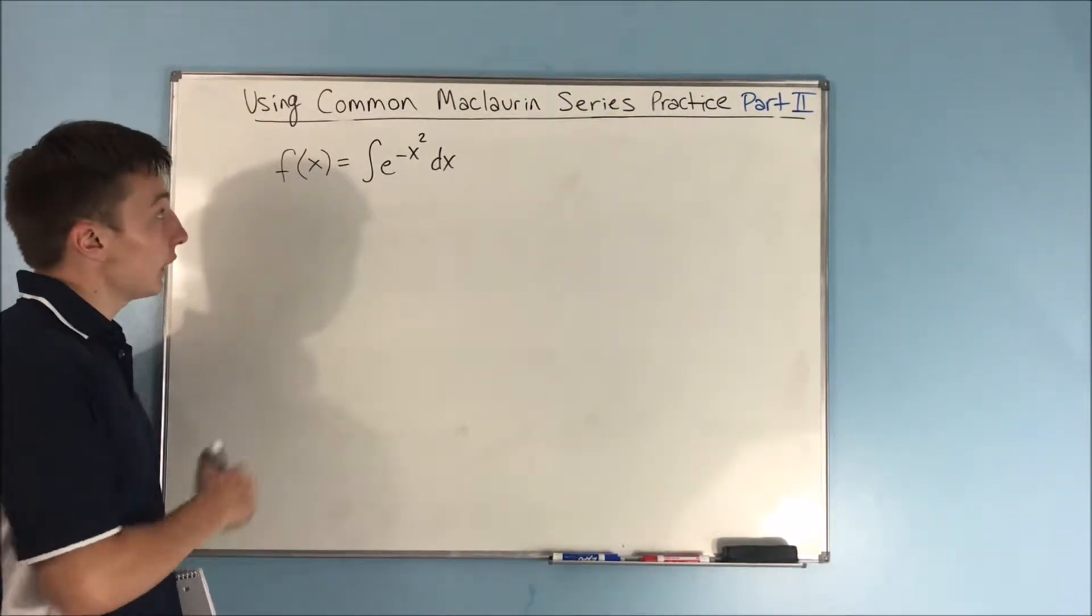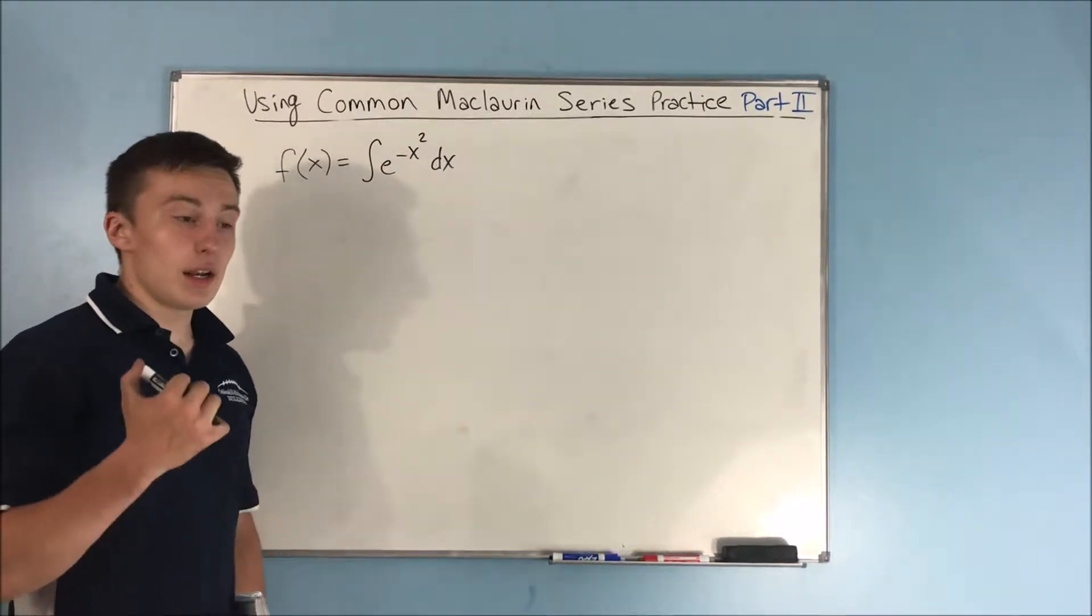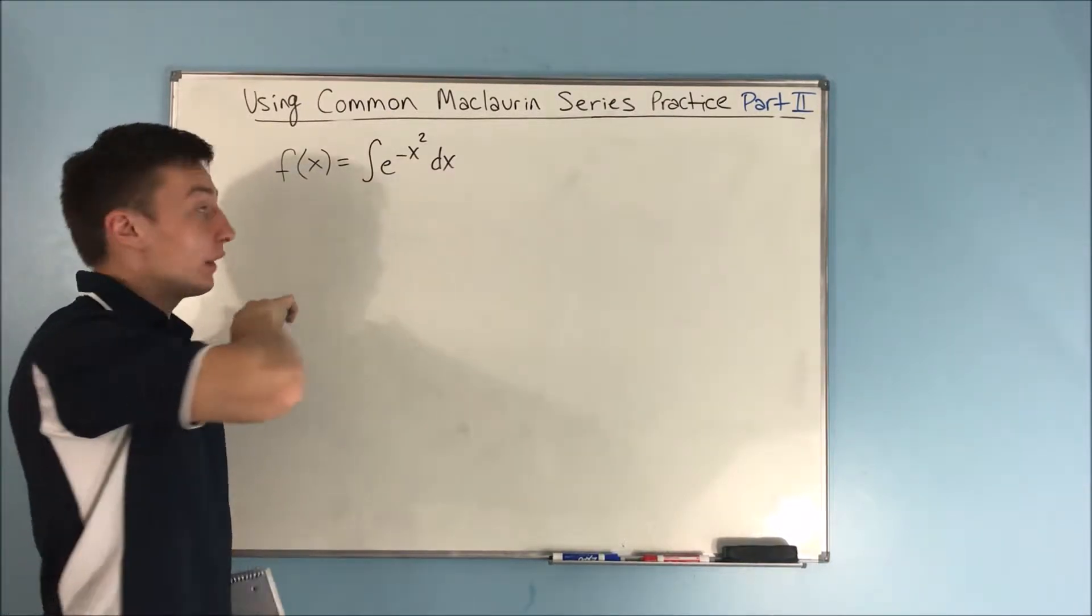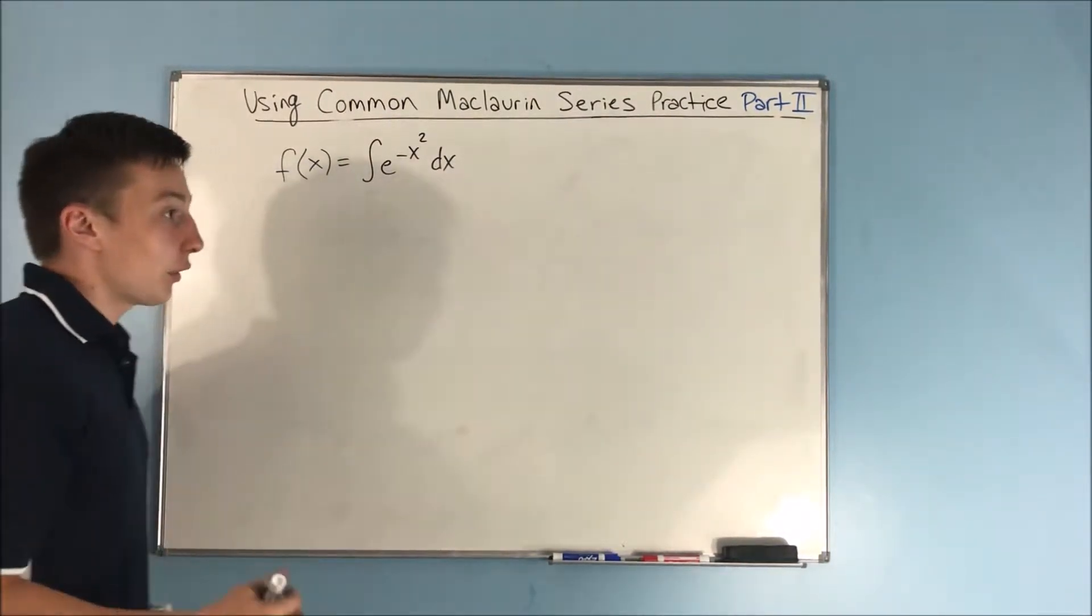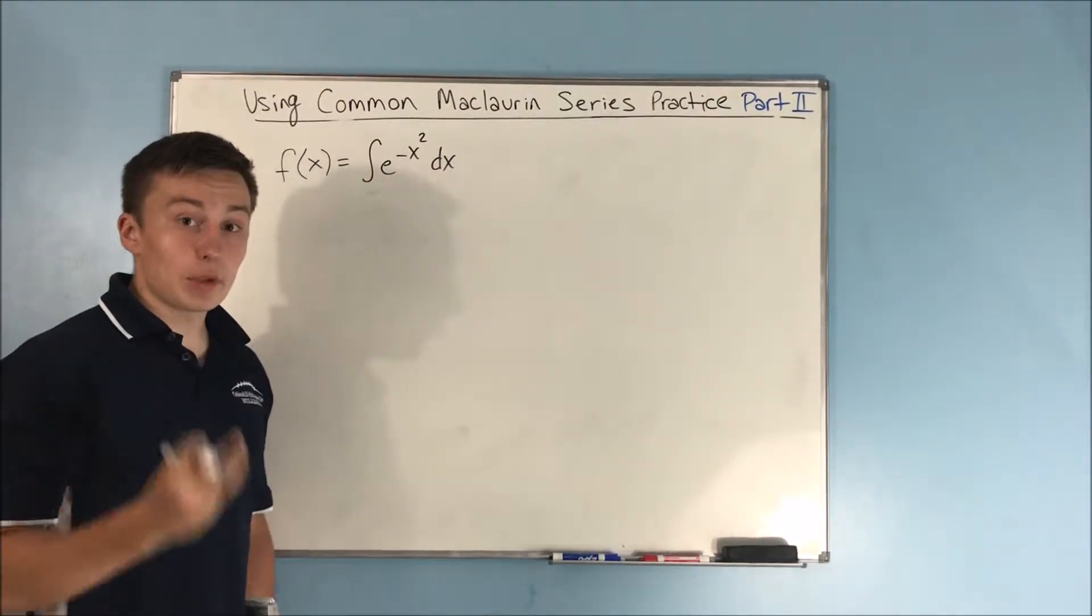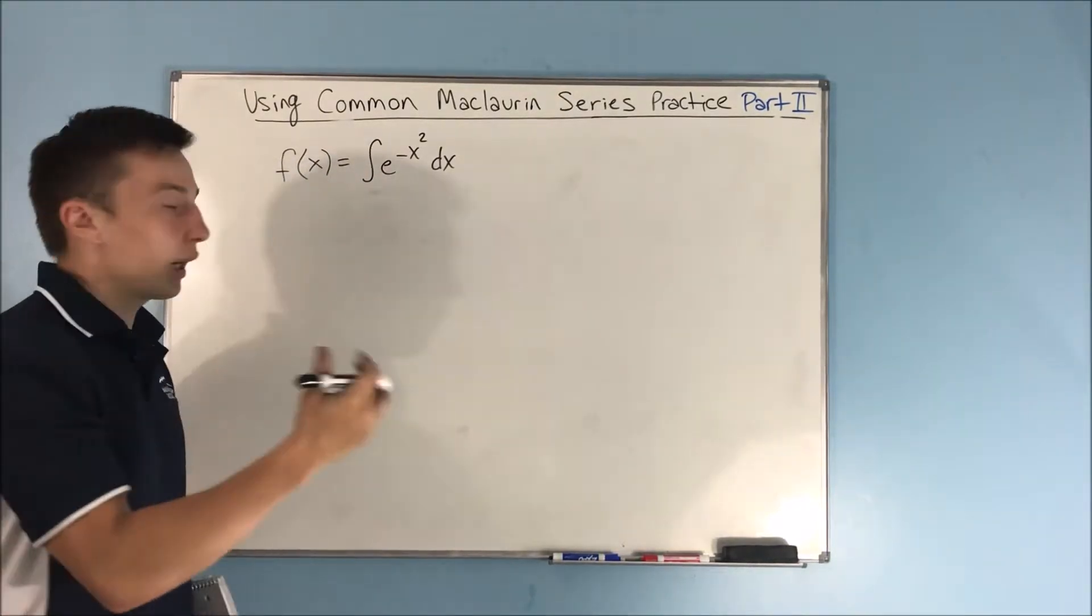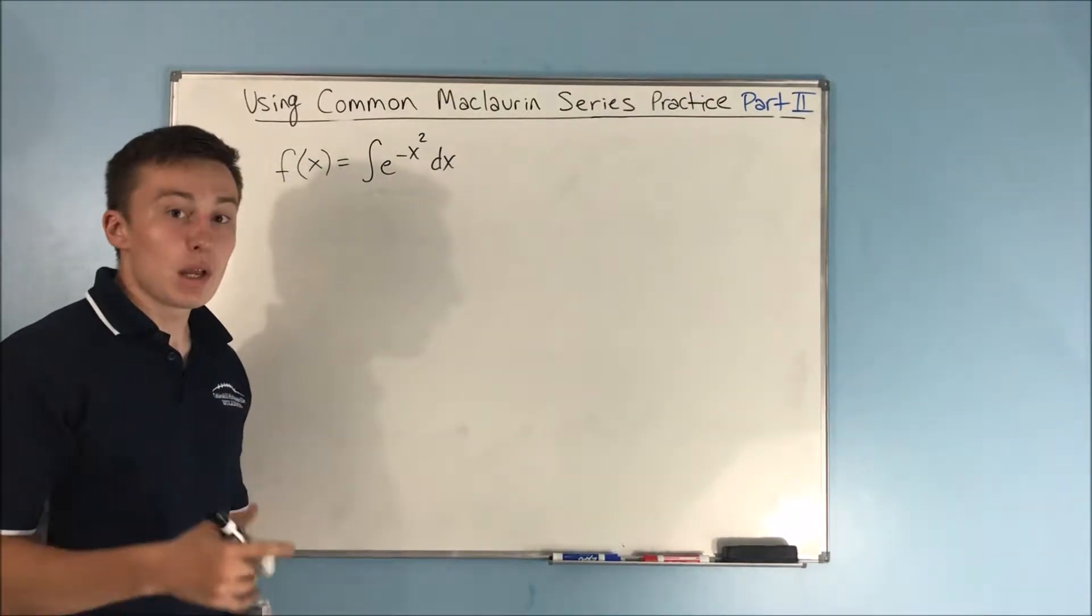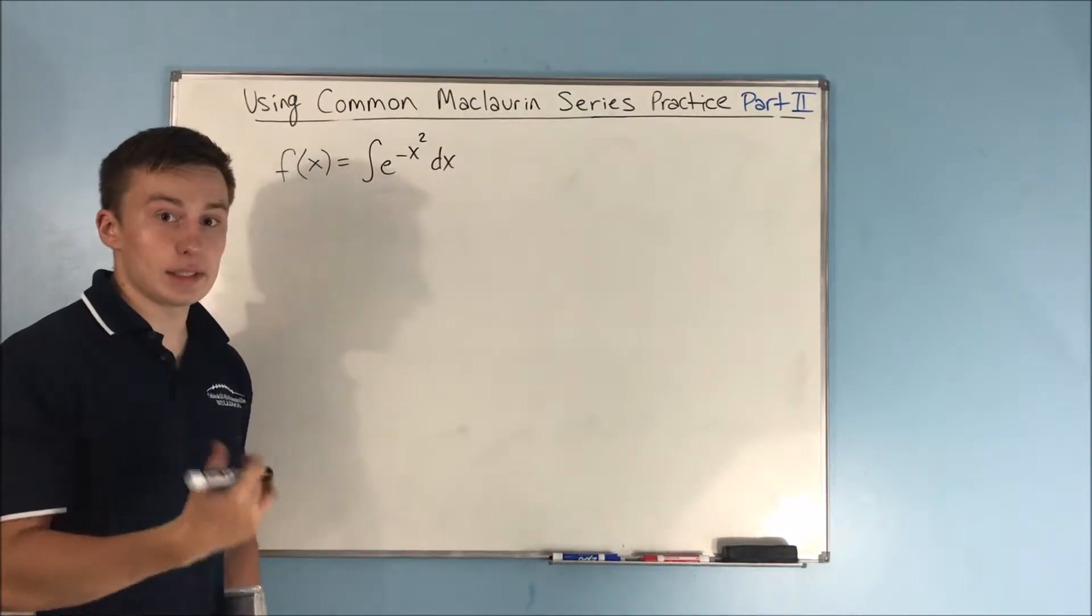Now here our function is the integral of e to the negative x squared dx. This is an integral that you cannot do - you can't do it with a u-substitution. So what we're going to do is solve this using a Maclaurin series. We're not going to actually integrate this, but we're going to use a Maclaurin series to find out what this whole thing actually is.